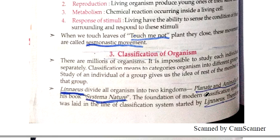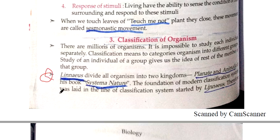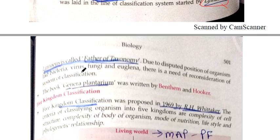Now the third topic is the classification of organisms. Linnaeus divided all organisms into two kingdoms: first is Plantae and second is Animalia, in his book known as Systema Naturae. Linnaeus is called the father of taxonomy because he first started classification, which is studied under taxonomy.